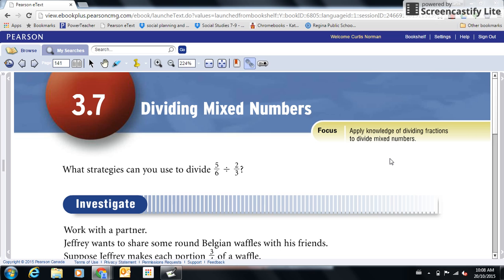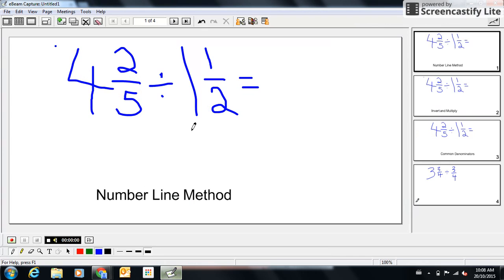We will be dividing mixed numbers. In case you don't know what a mixed number is, I will show you right here. This is a great example of a mixed number. Four and two fifths divided by one and a half. We will look at this question, we will answer it three different ways, and you will pick your favorite method.